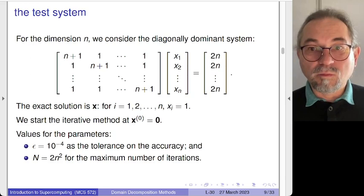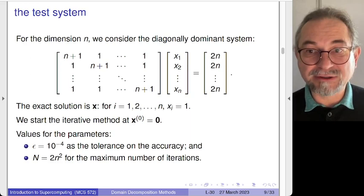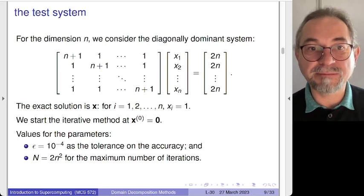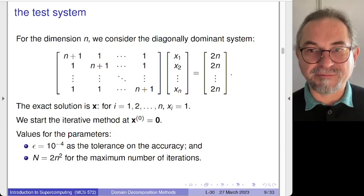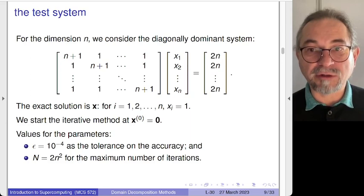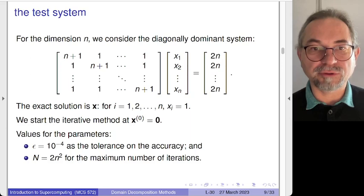For the test system, one condition for convergence is that the matrix is diagonally dominant. We take a matrix of ones, compute the sum of all elements (which is n), and add n to each diagonal element. A matrix is diagonally dominant when the diagonal element is larger than the sum of all off-diagonal elements on that row. So n+1 is larger than n, the sum of off-diagonal elements on each row, and under these conditions Gauss-Seidel will converge.